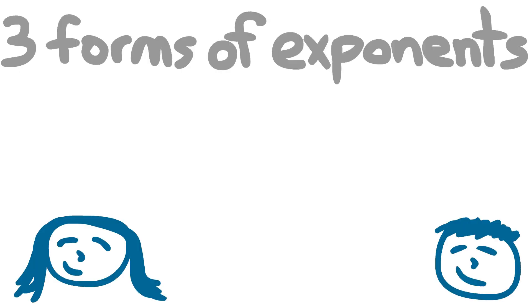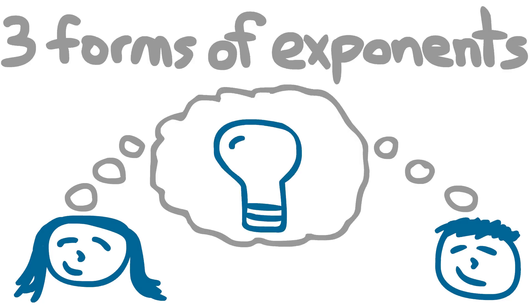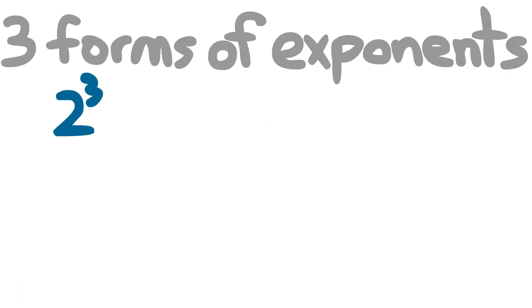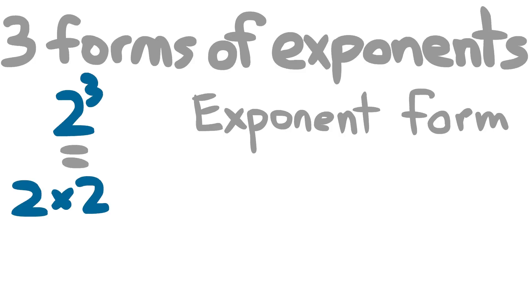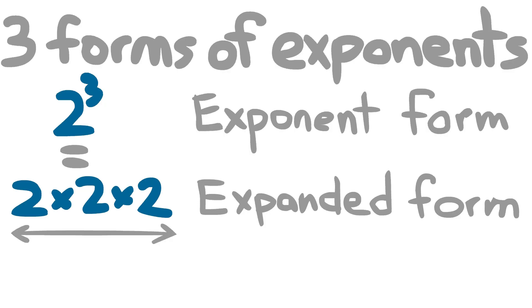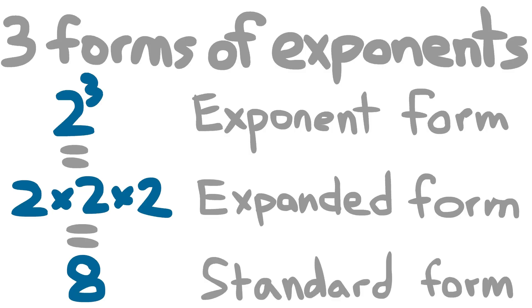Now let's look at the three different forms of exponents. You might find that you already know them. 2 to the 3 is known as the exponent form. It's because there's an exponent in there. 2 times 2 times 2 is the expanded form. It's because you've expanded the exponent form. And the result of 8 is the standard form.